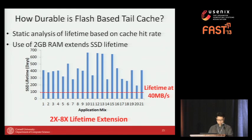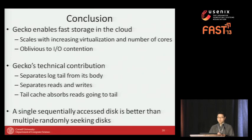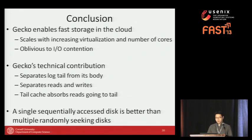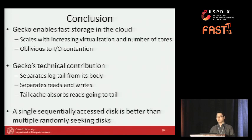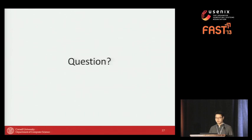In conclusion, Gecko enables a fast storage system inside virtualized cloud environments and scales with virtualization where multiple VMs work together. Our design principle — a single uncontended disk outperforms multiple contended disks, and separating reads and writes results in better performance — is validated. Gecko achieves this by separating the tail of the log from the body and aggressively caching the tail drive. Thank you, I'll take questions.